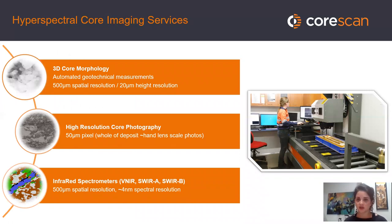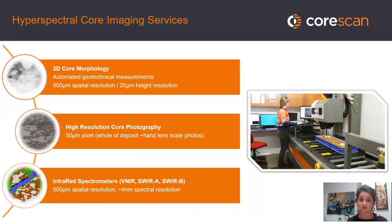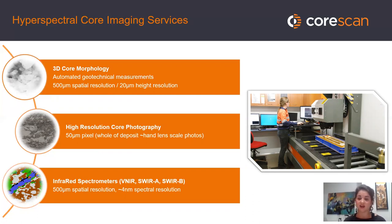Our system provides high-resolution core photography at 50 micron pixels — essentially at close to a hand lens resolution at the drill hole scale. We have three completely co-registered infrared spectrometers in the VNIR and two in the SWIR, at 500 micron spatial resolution and about 4 nanometer spectral resolution. We also have a laser profiler mapping core morphology for geotechnical applications, at 500 micron spatial resolution and 20 micron height resolution. All of these are completely spatially co-registered.